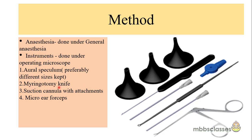Next is the Myringotomy knife, which is a sharp knife used to make the incision. The next required instrument is the suction cannula with attachments for sucking out the middle ear fluid. For holding the tympanostomy tube in cases of otitis media with effusion, we sometimes require micro ear forceps or crocodile forceps.